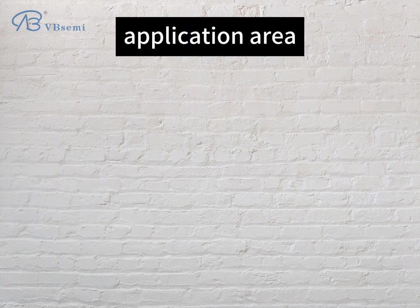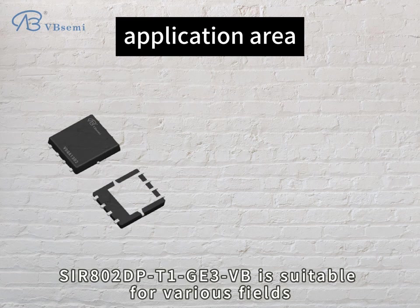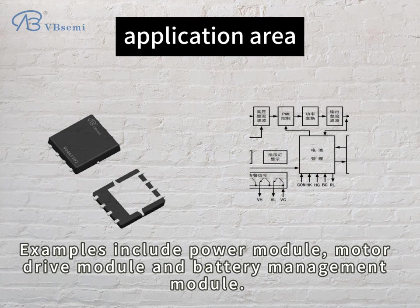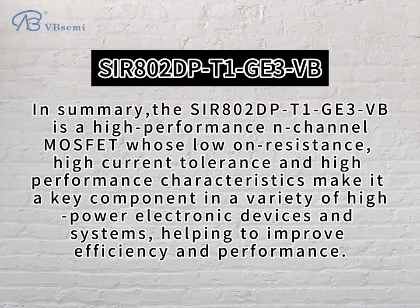Application area: Sir Barling-R PPT-EGE-3VB is suitable for various fields. Examples include power modules, motor drive modules, and battery management modules. In summary, it is a high-performance N-channel MOSFET with low on-resistance. High current tolerance and high-performance characteristics make it a key component in a variety of high-power electronic devices and systems, helping to improve efficiency and performance.